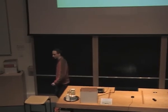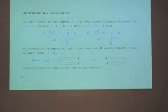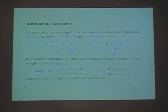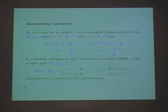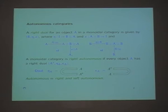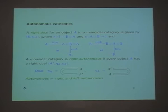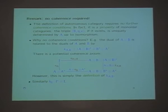Let me first quickly state the definition of autonomous category — I think you've seen it at least three or four times yesterday and also 100 times last week at the school. A right dual for an object A in a category is just another object B, such that there exist epsilon and eta satisfying the two equations. You can see how it always appears as the S-shaped thing and the other S-shaped thing. Left dual is defined similarly, and the category is right autonomous if every object has a right dual.